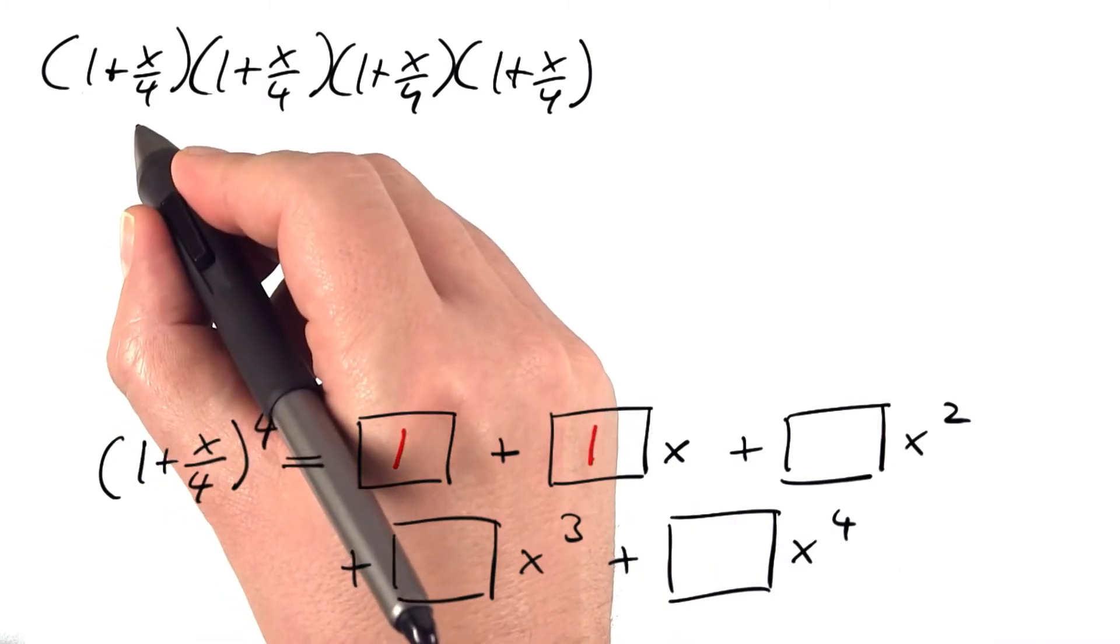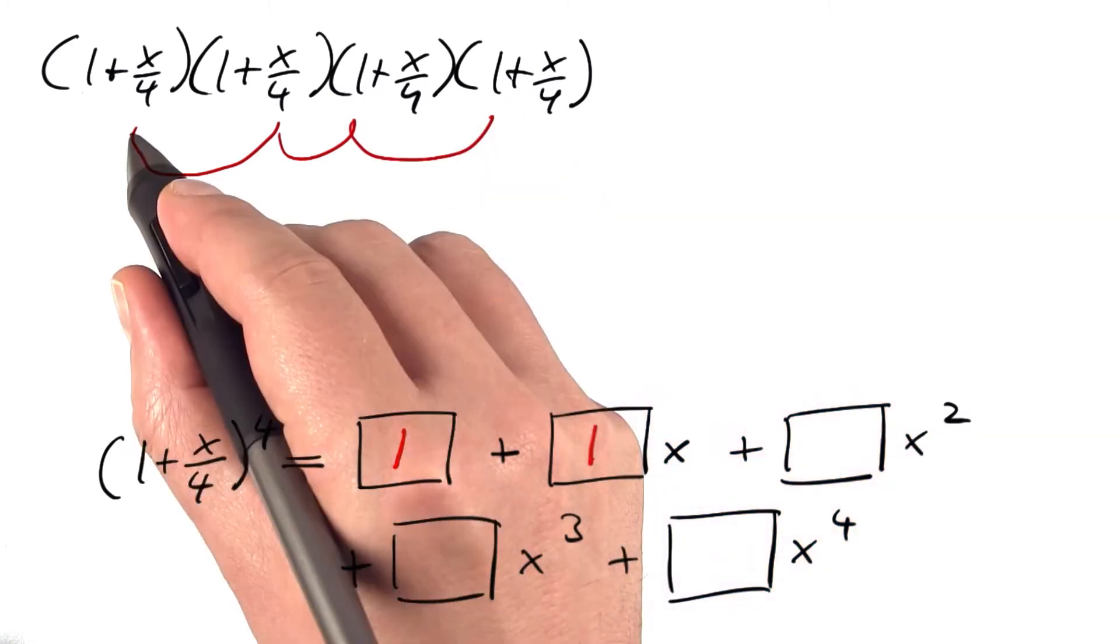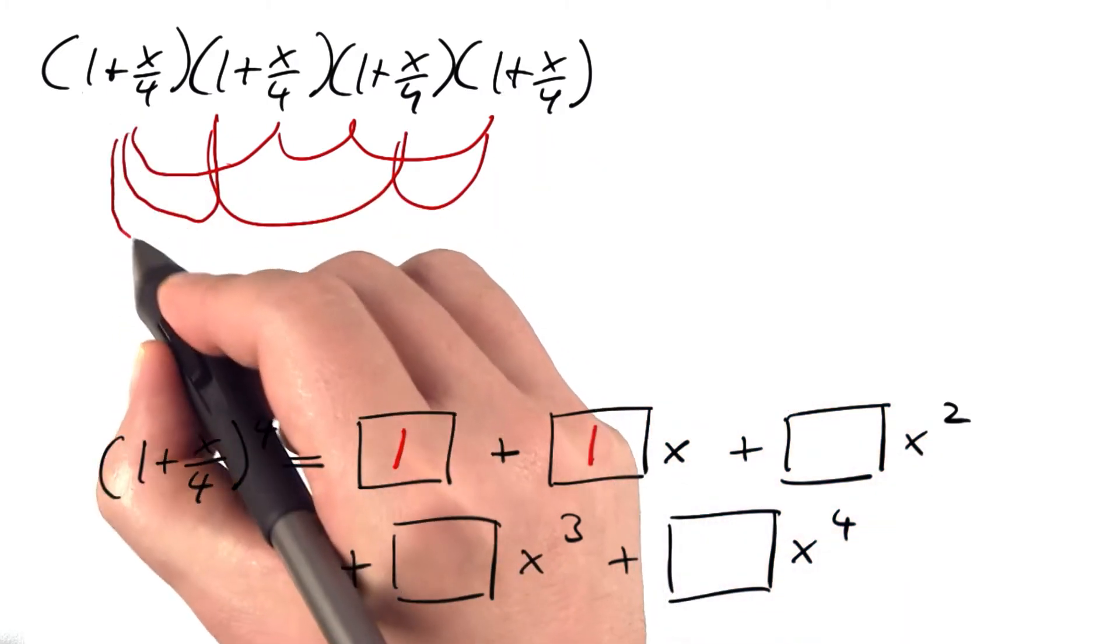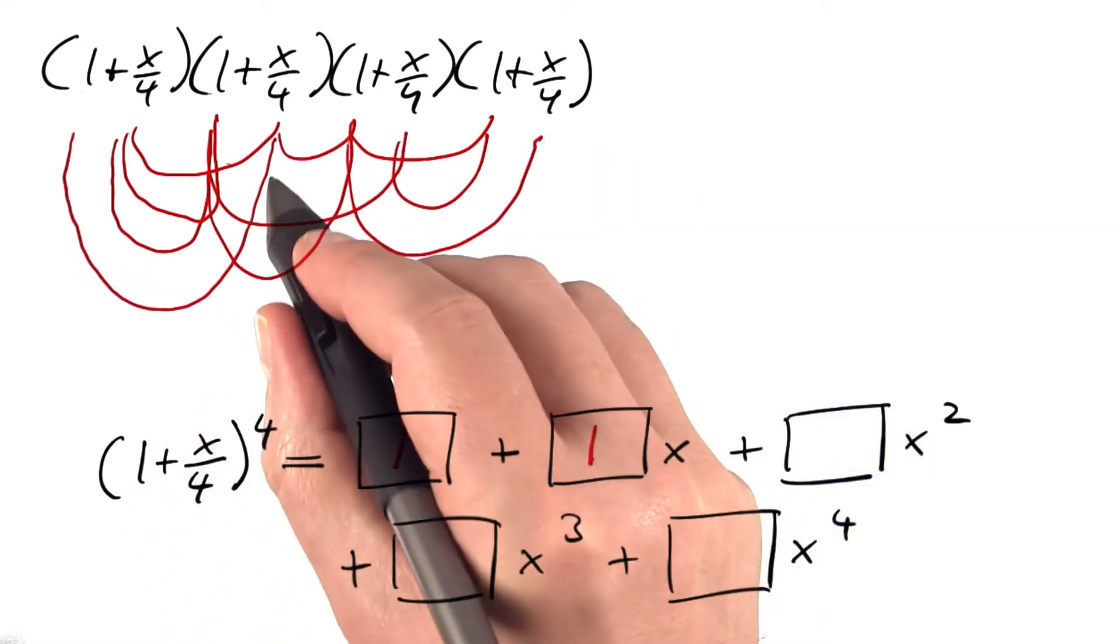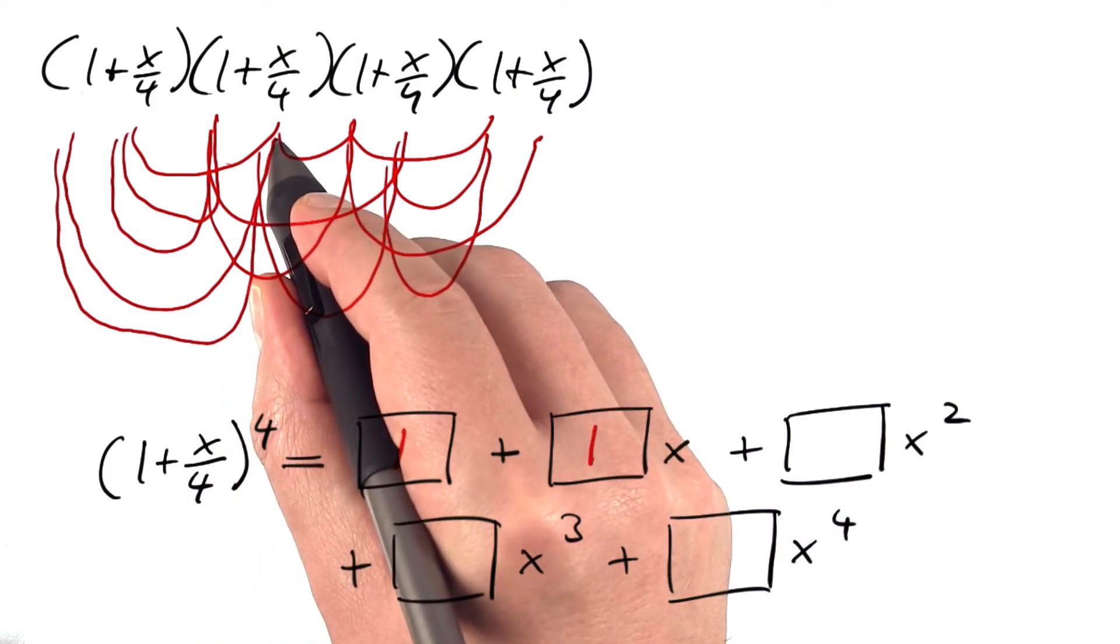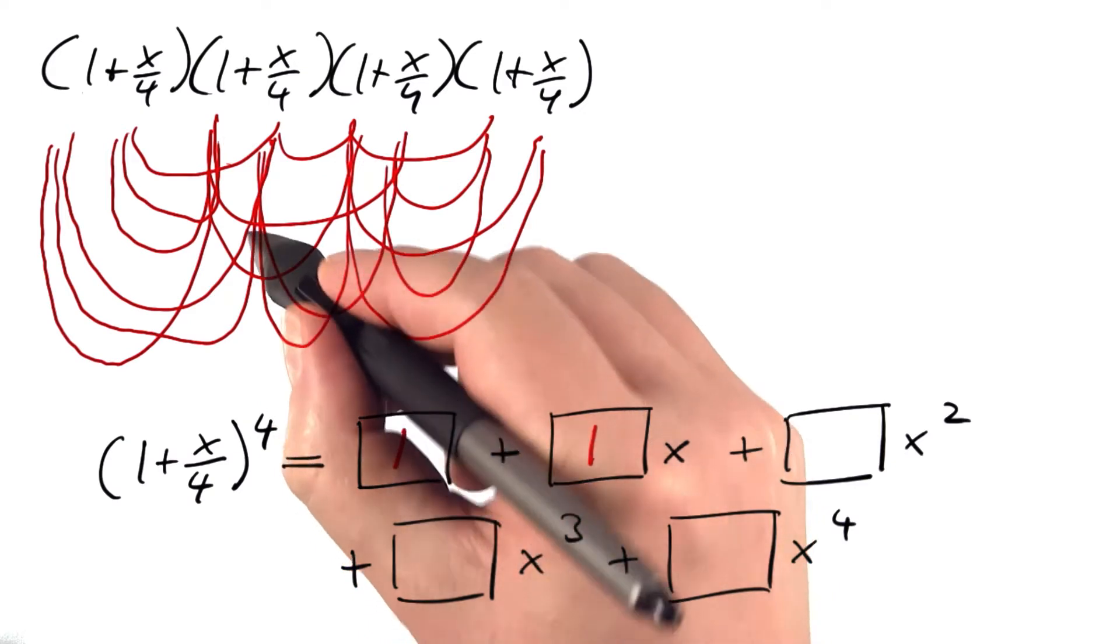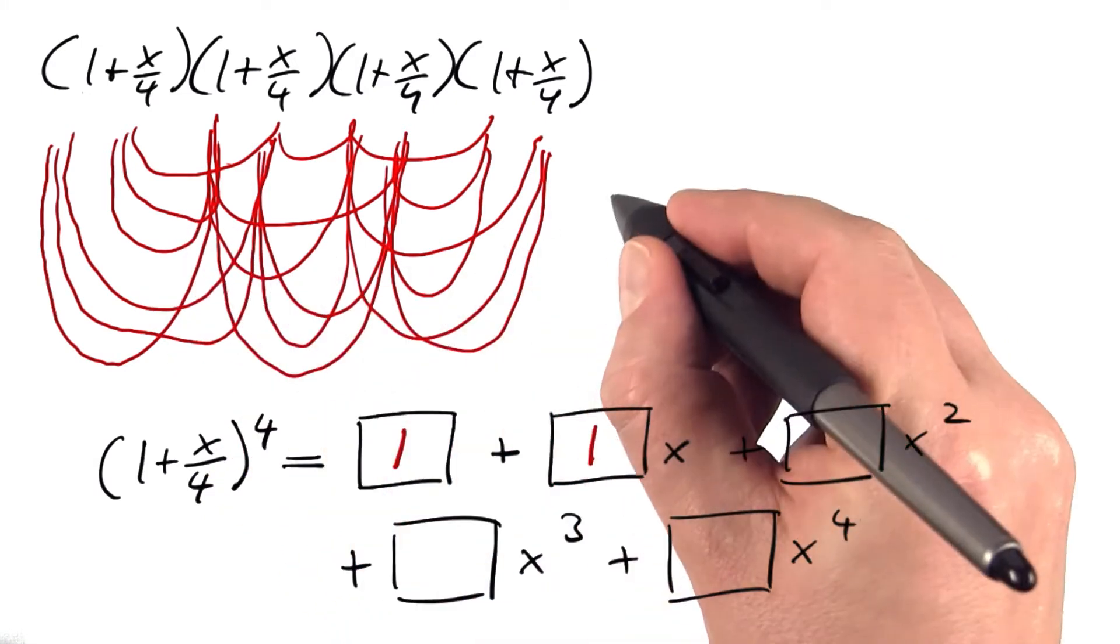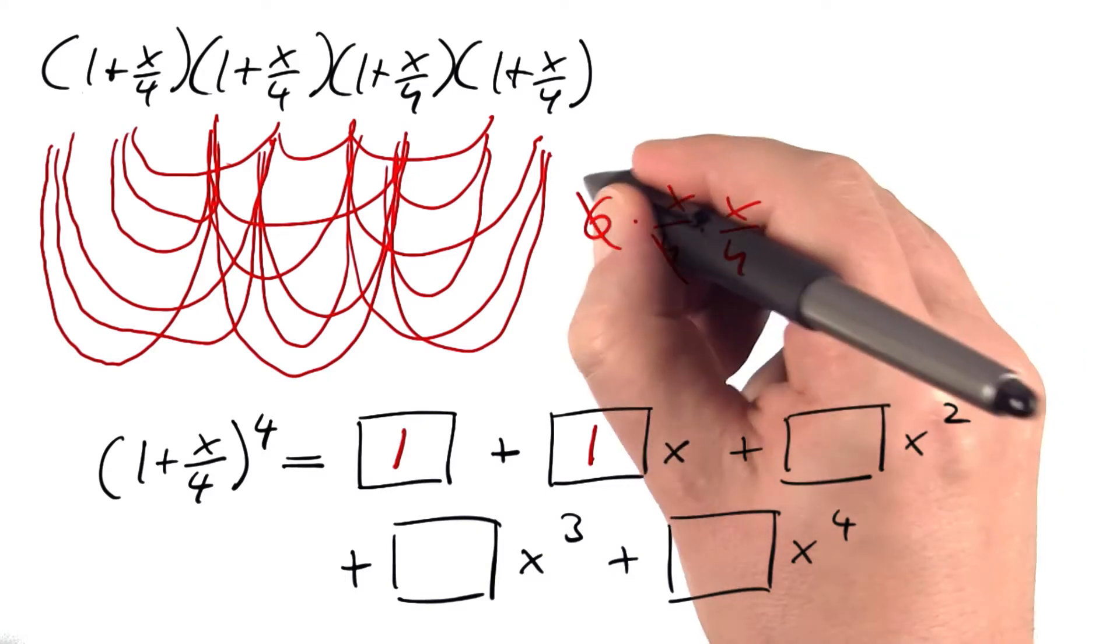For x squared, we need x from two parentheses and 1 from the other two. We could pick x from the first and second, or first and third, or first and fourth, or second and third, or second and fourth, or third and fourth. Six options to form something that contains x squared. Six times (x/4) times (x/4). We can cancel a factor of two, which leaves us with 3/8.